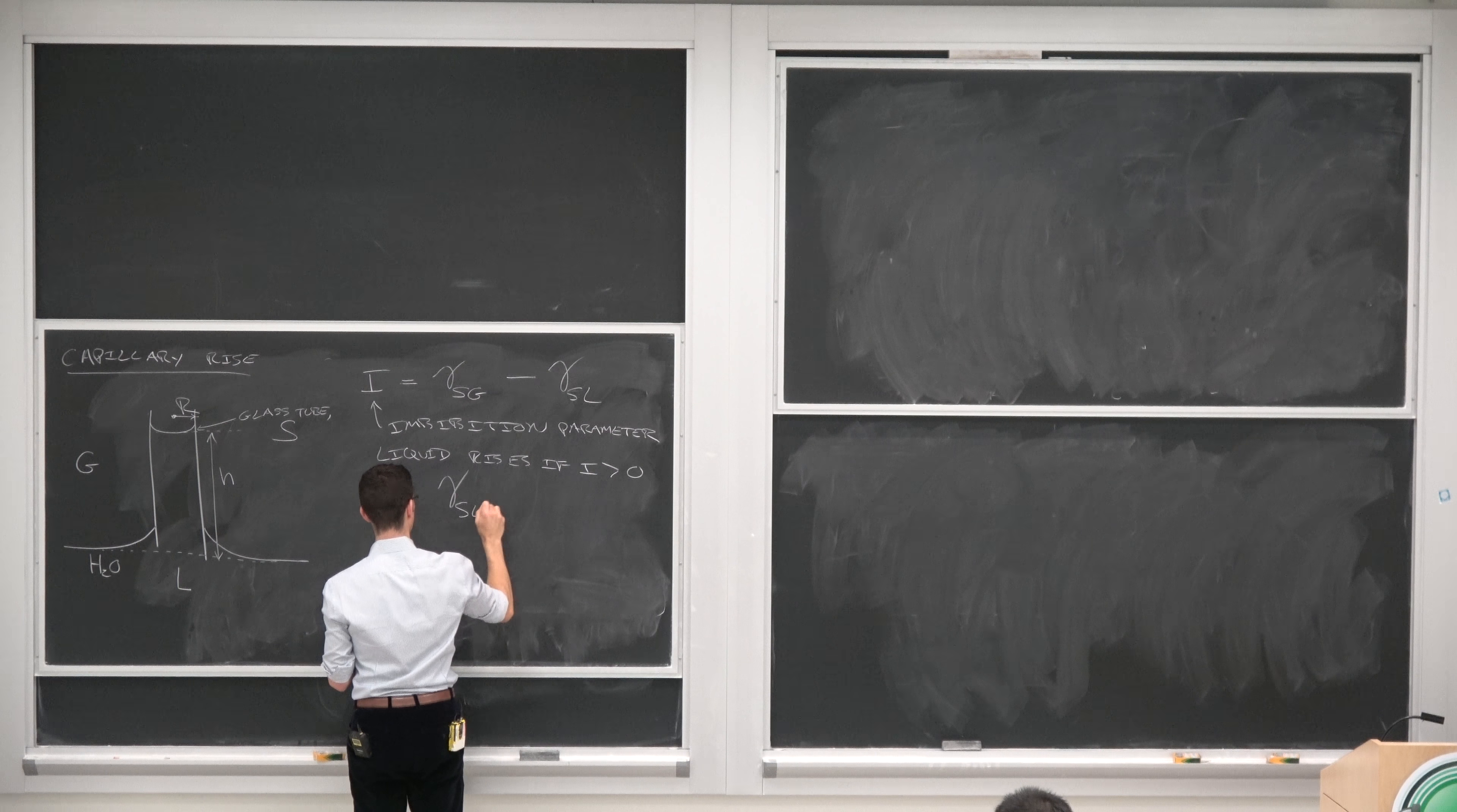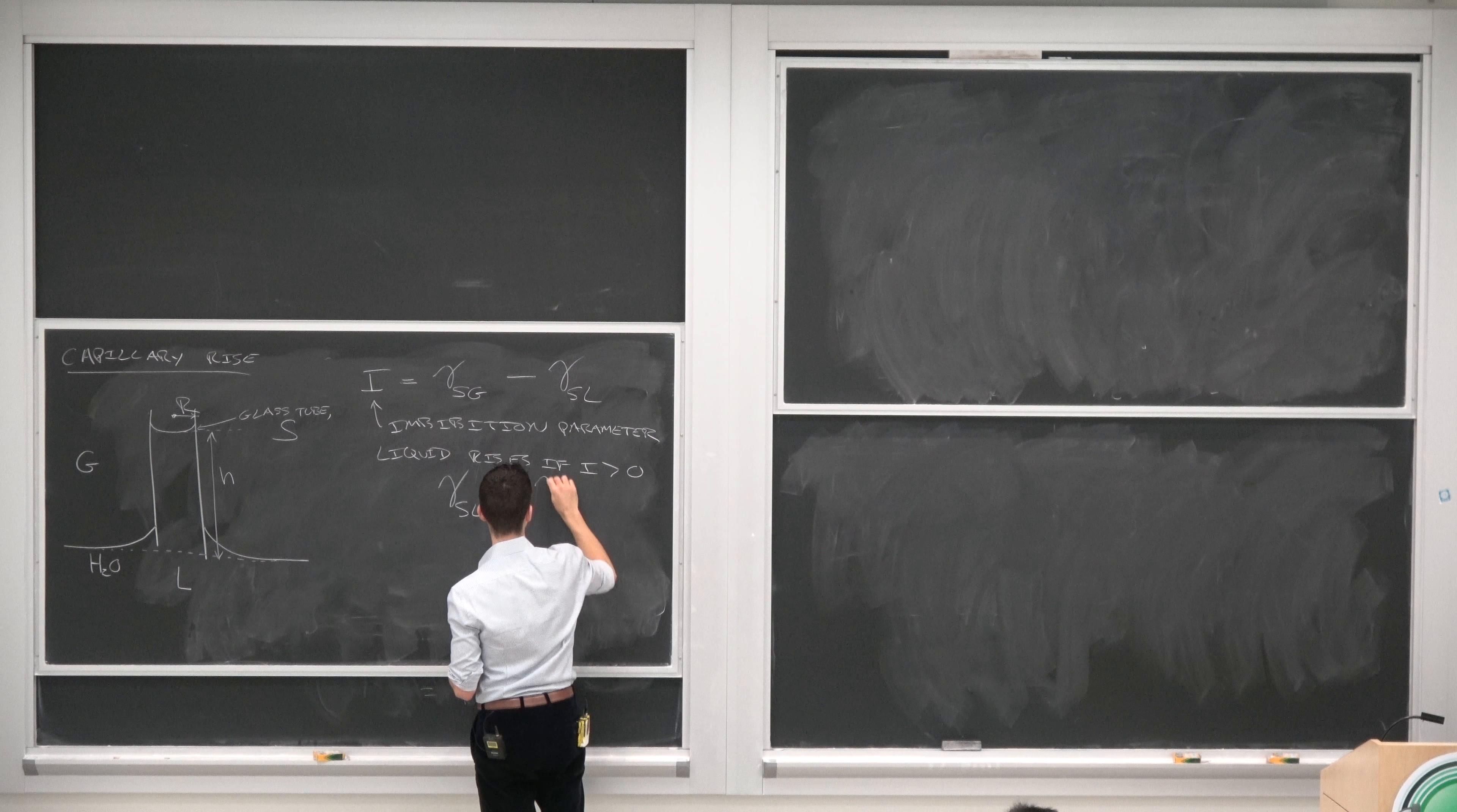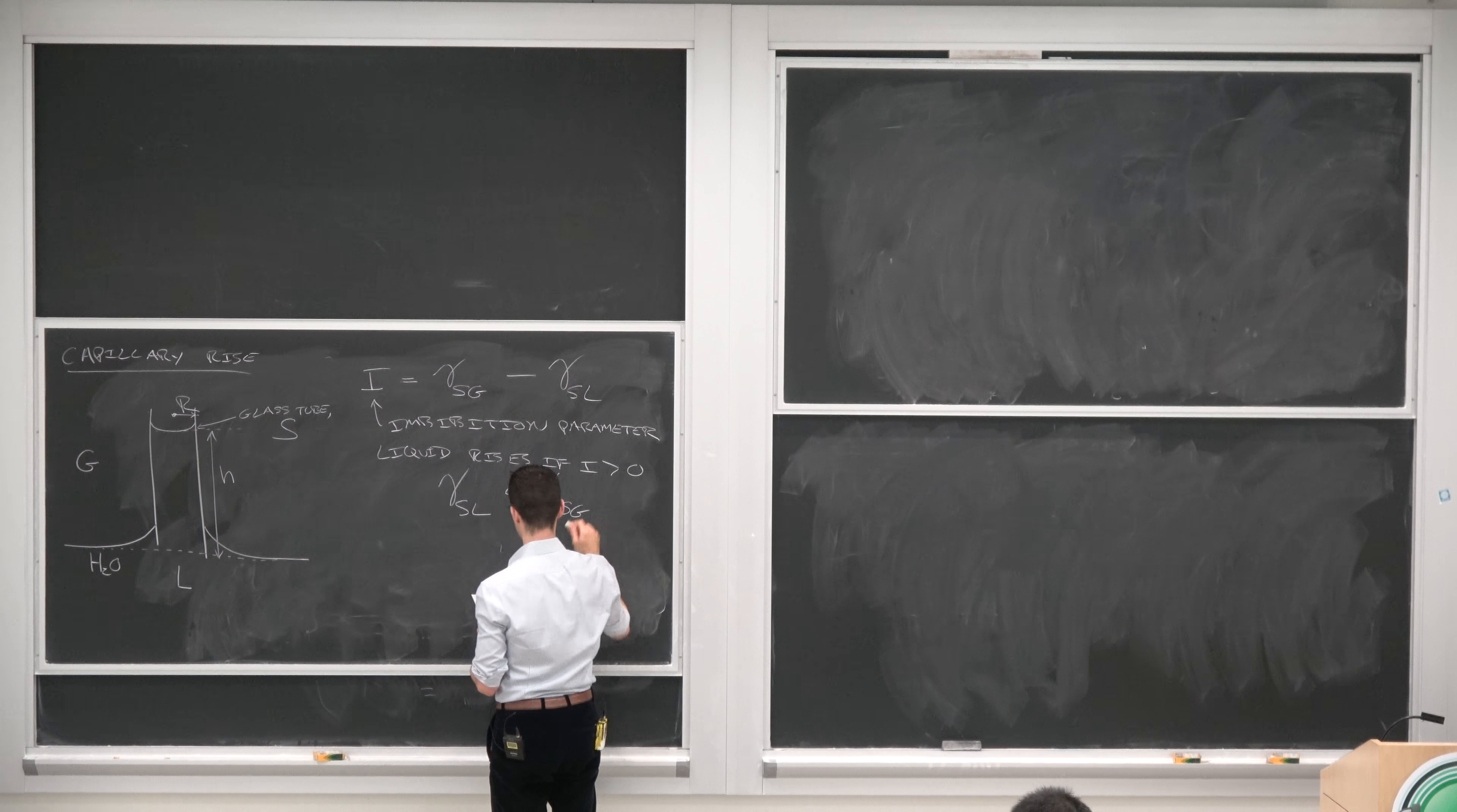So this is the thirsty condition, technical term. And we get this if gamma SL is less than gamma SG.